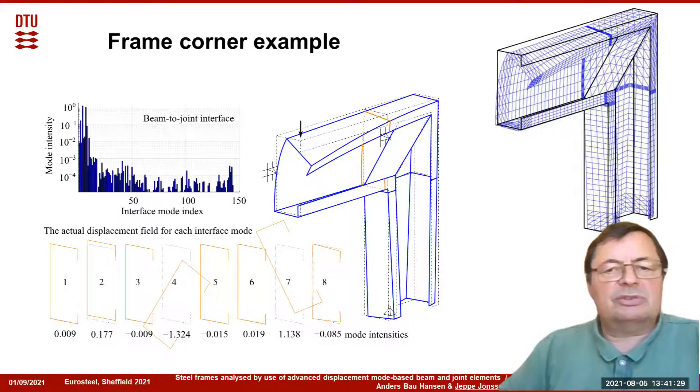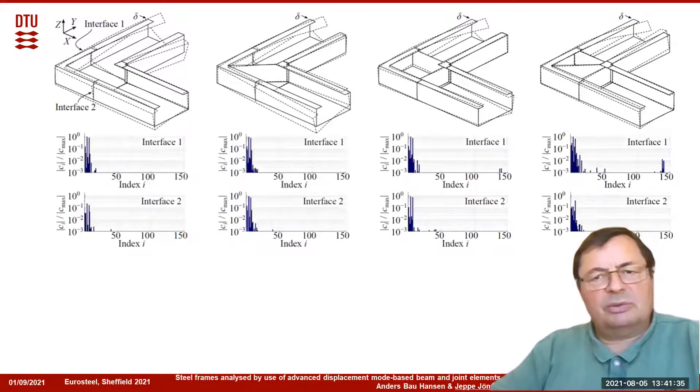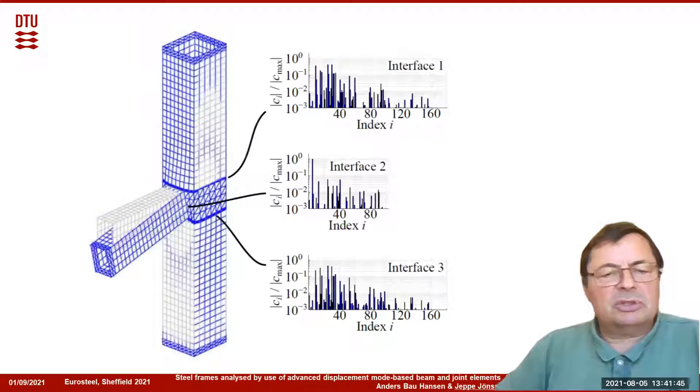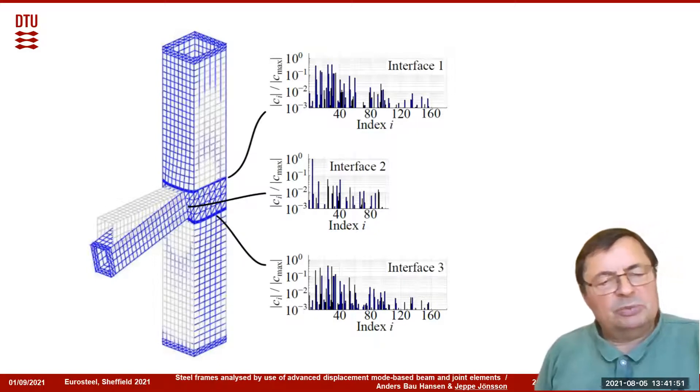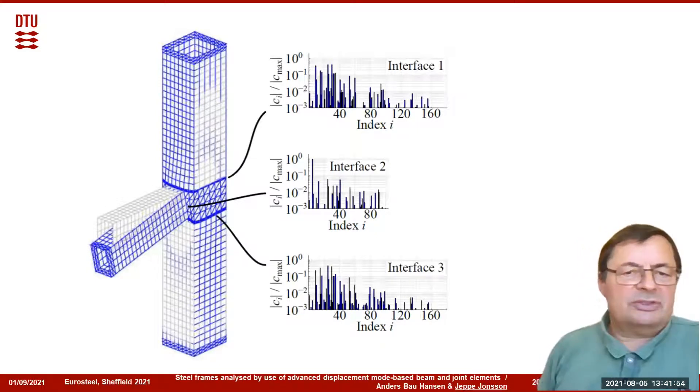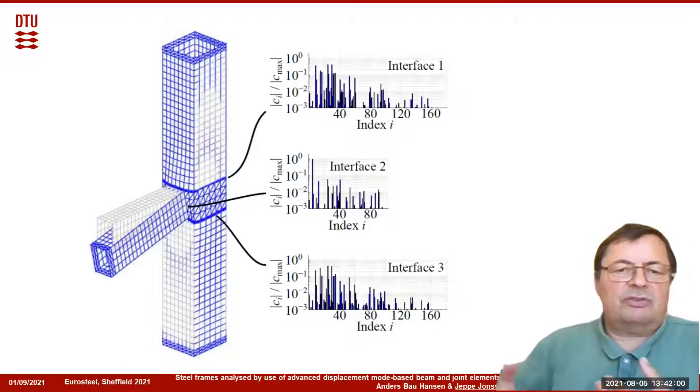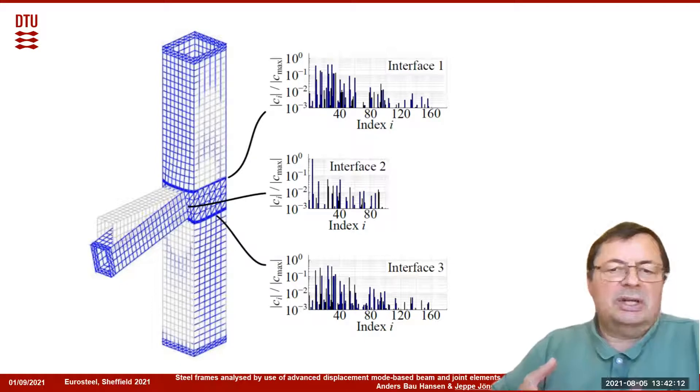It would be interesting to use a reduced number of degrees of freedom. We can do the same type of analysis for different frame corners, and we get more or less the same type of effects. One special corner which we have also analyzed is this assembly between beam tubes, where we can see that there is no internal stiffness, so we need plate action to transfer the forces, meaning there's a lot of local plate bending, meaning that we need to introduce many more modes to describe this. We can see that many more modes participate at the interfaces.